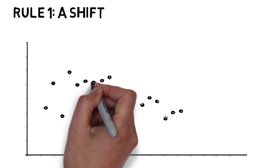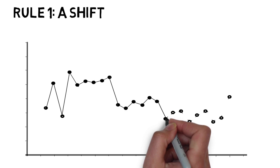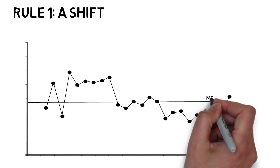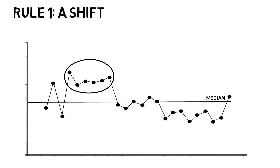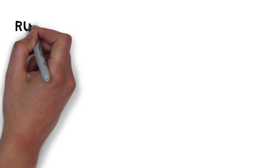Rule 1, a shift, is evident when the run chart shows 6 or more consecutive points all above or all below the median. When interpreting the chart, data points that fall on the median do not add to or break up a shift. Just skip those values that fall on the median and continue counting.